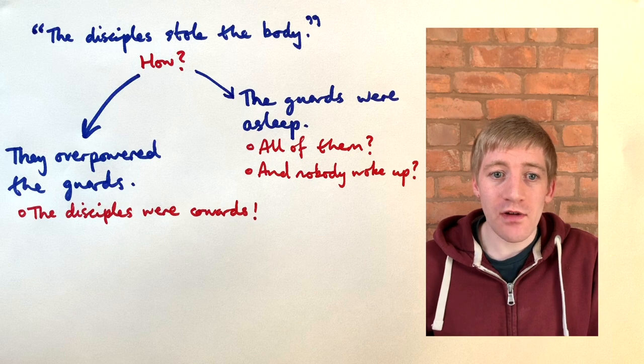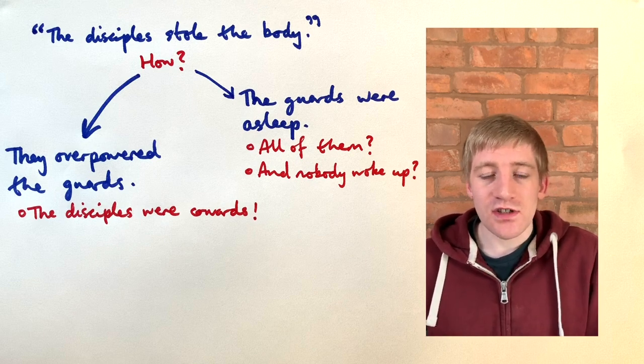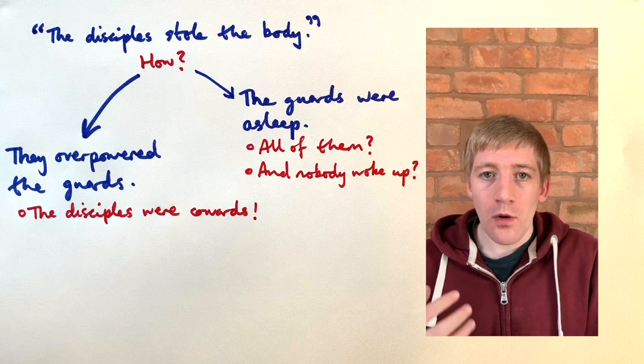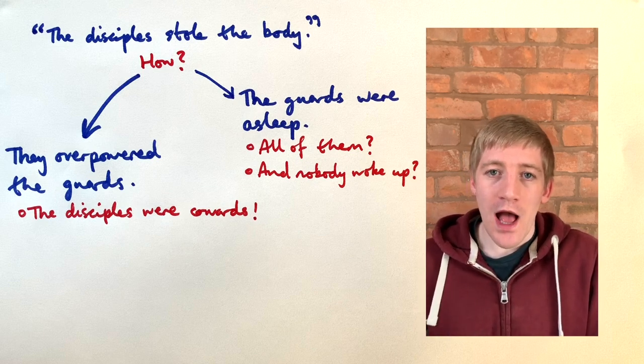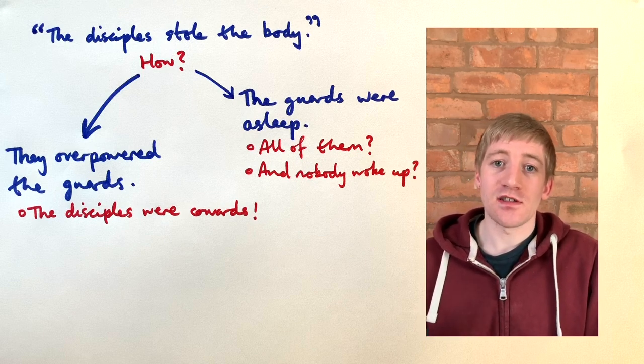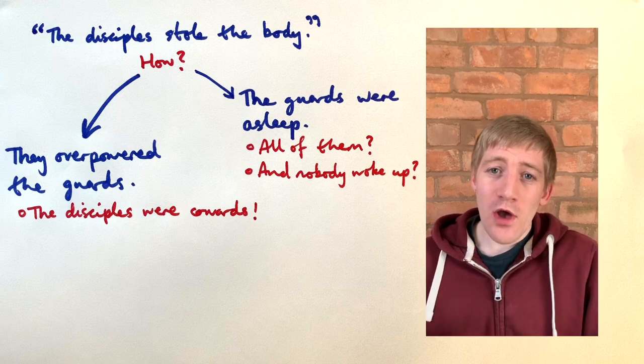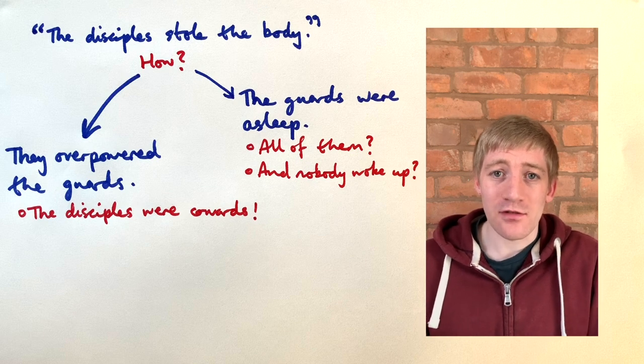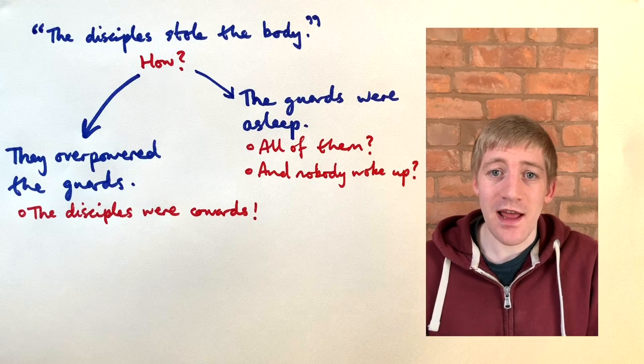We still have one really big thing to explain. After the events of the resurrection of Jesus the disciples were completely transformed. They went from being cowardly men who were hiding to boldly going around preaching that Jesus had risen from the dead and for doing this every single one of them was persecuted and ultimately ended up being brutally killed because of the message that they were going around telling everyone that Jesus had risen from the dead.